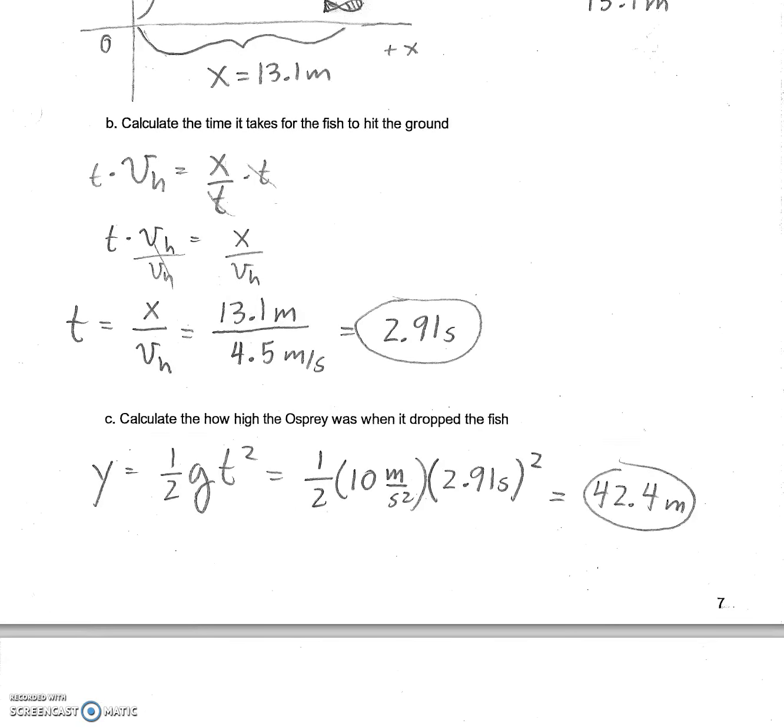Now that we have our time, we can calculate how high it was. When it asks how high, it's asking for the vertical distance, or our y value, which is one half gt squared. We'll plug in 10 meters per second squared for g. We'll plug in 2.91 seconds for t. We'll square our t value, multiply it by 10, divide it by 2, and it's going to be 42.4 meters above the ground.